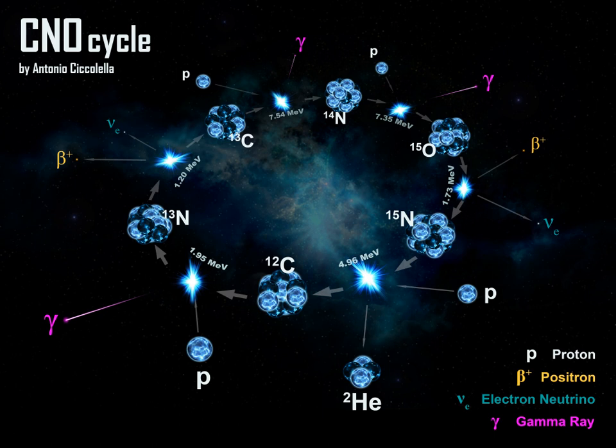This subdominant branch is significant only for massive stars. The reactions are started when one of the reactions in CNO2 results in fluorine-18 and gamma instead of nitrogen-14 and alpha, and continues 17 8 O to 18 9 F to 18 8 O to 15 7 N to 16 8 O to 17 9 F to 17 8 O.